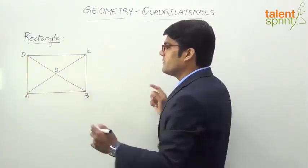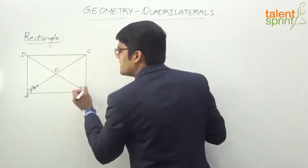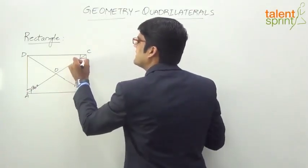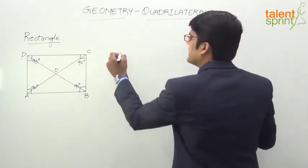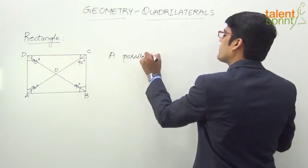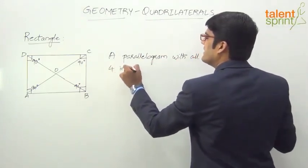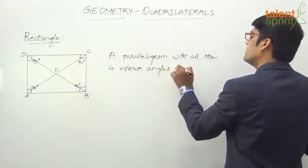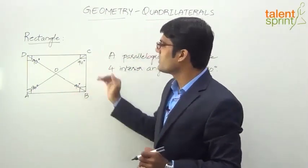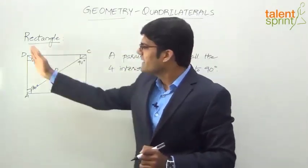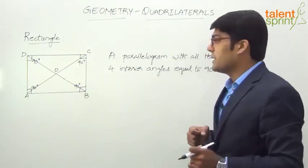What is special here is that the adjacent sides are perpendicular. If you look at angle A, this is 90 degrees — a right angle. The same is the case with any other pair of adjacent sides: this angle is 90 degrees, this angle is 90 degrees, and this angle is also 90 degrees. So a rectangle is a parallelogram with all four interior angles equal to 90 degrees, or equivalently, all pairs of adjacent sides are perpendicular.